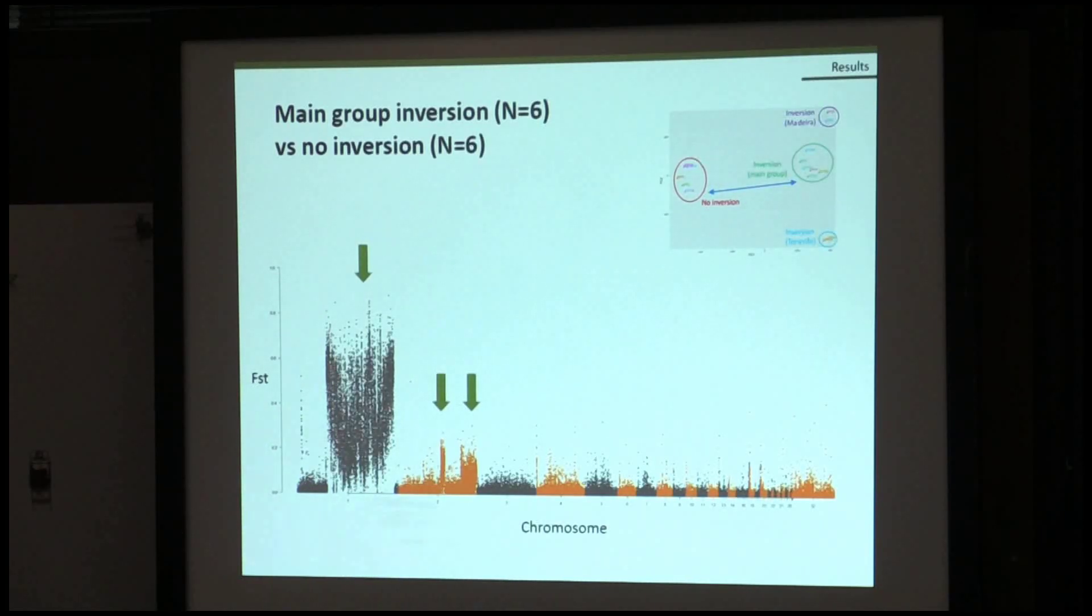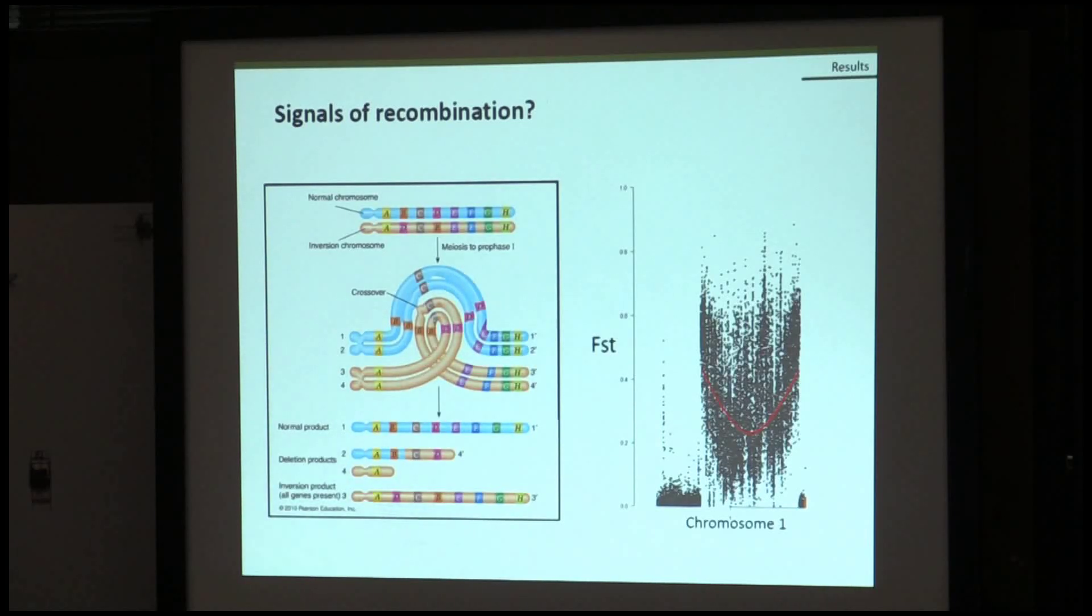The shape of this region, the putative inversion, is like a U, as you can see better here. That is compatible with the idea that there could be some recombination among samples with and without inversion. This could occur because the chromosome without inversion can recombine with the one with inversion, because the last one could form like a loop, and so the central part of the inversion can experience some recombination, while the extreme parts, while the breakpoints, can't.